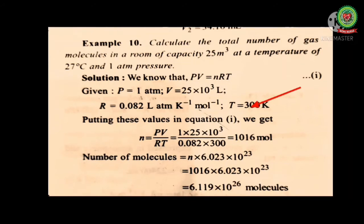Now we will be using the equation PV equals nRT. P is given to us, V is given to us, R also and T as well. So putting value of PV, R and T we will find out n, and n is the number of moles of gas. The value of n comes out to be 1016 moles.